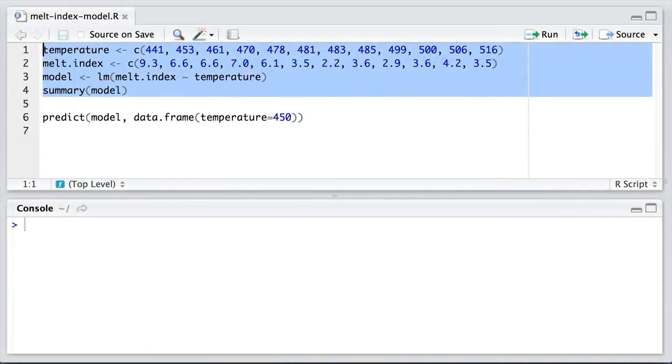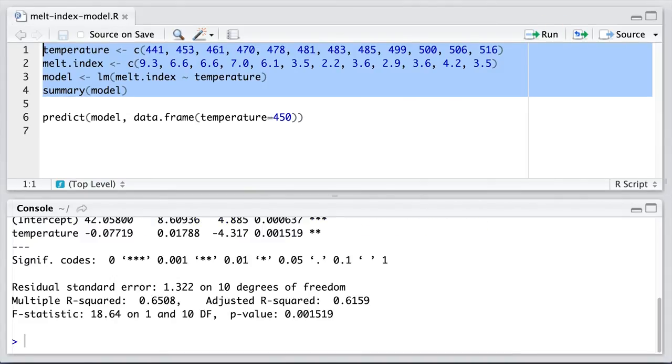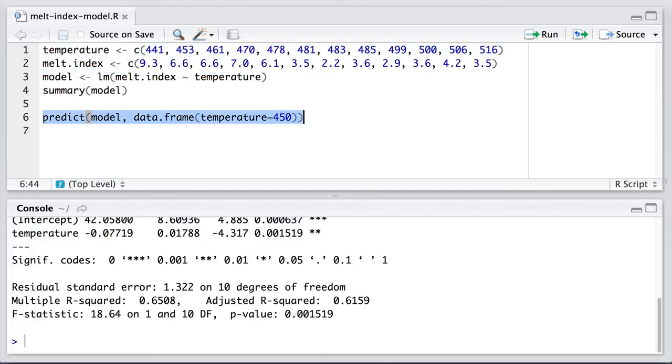Now we can perform these calculations in R. We've seen the predict function before. When we provide it as the first input the linear model, and as the second input a new data frame or a new data set, we get a prediction.